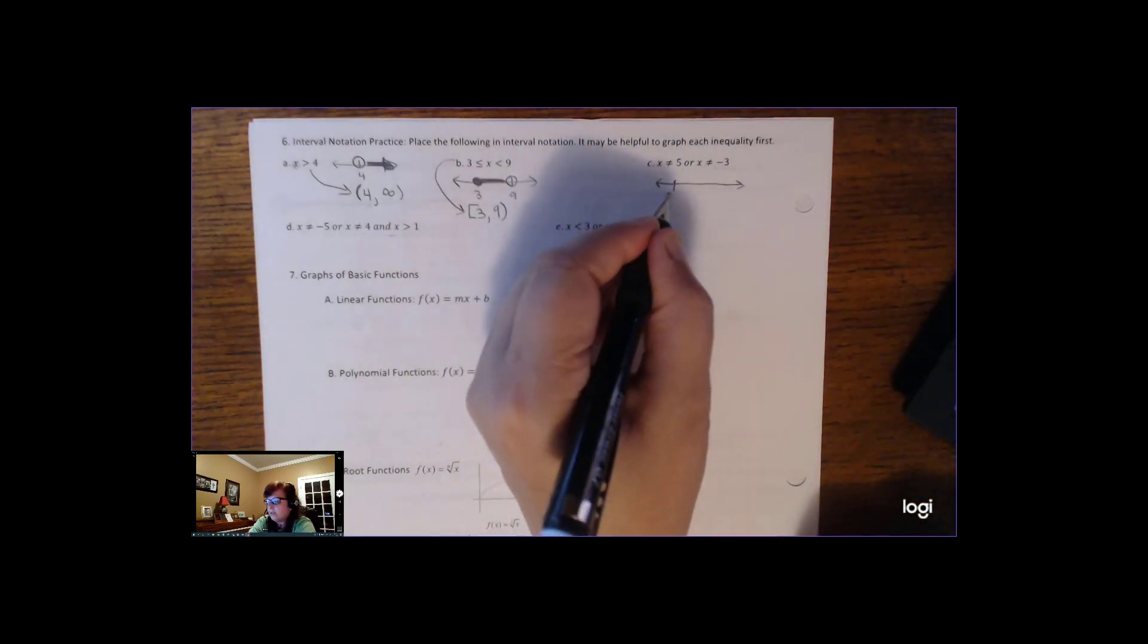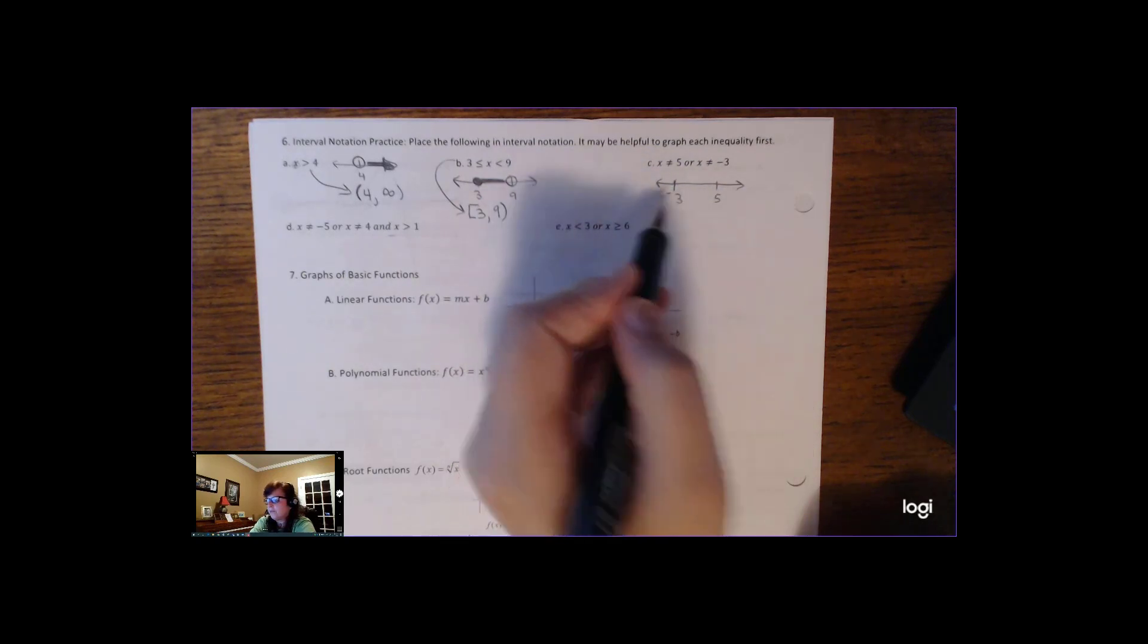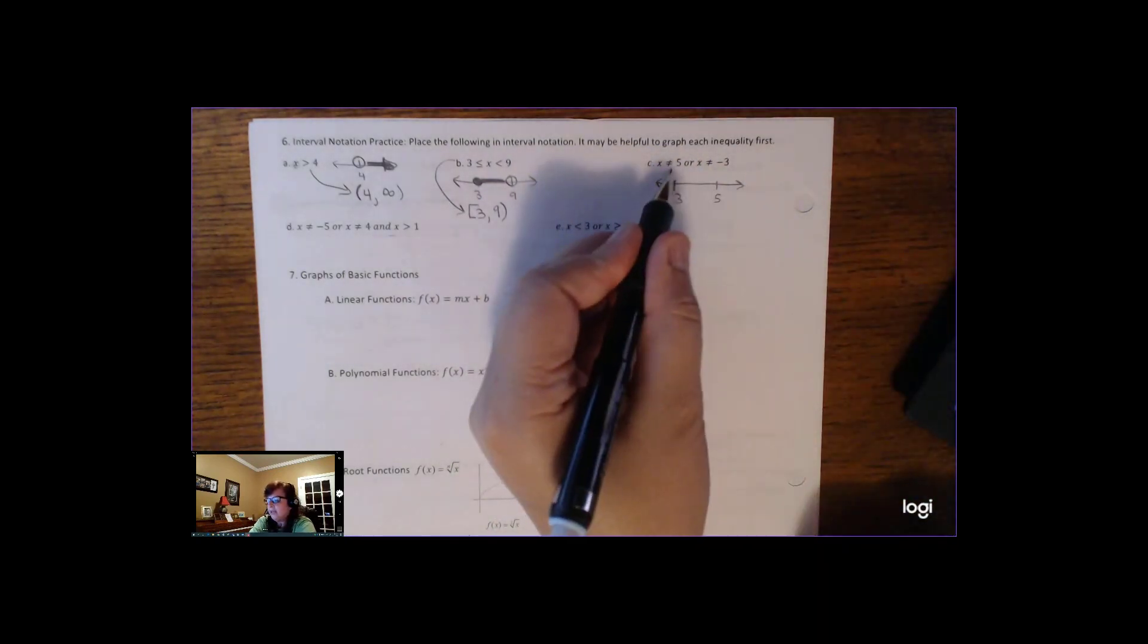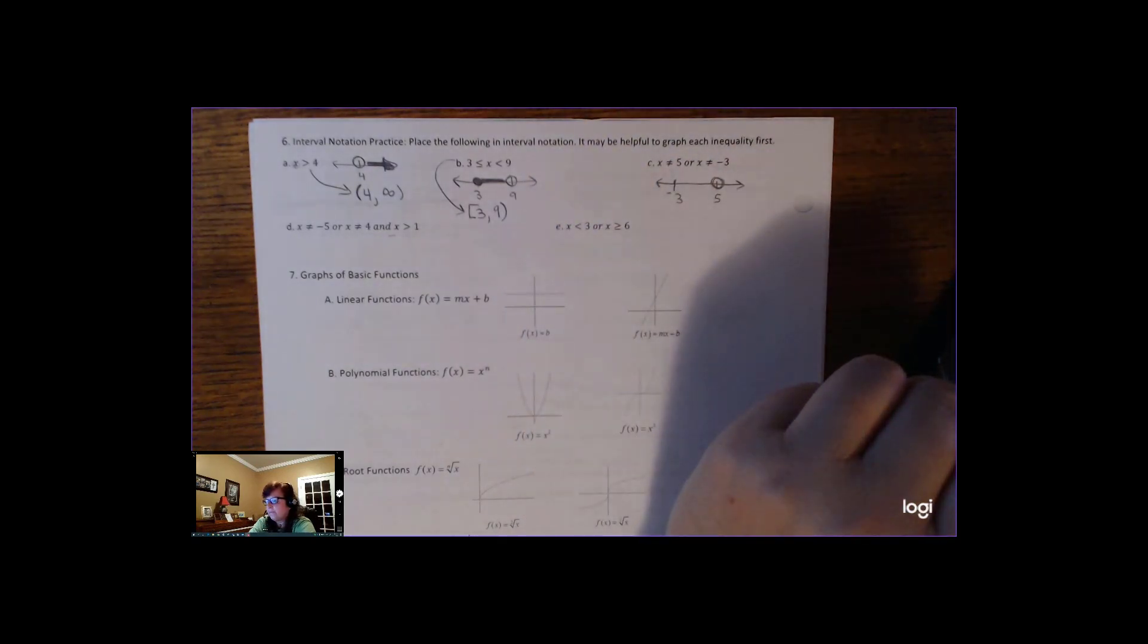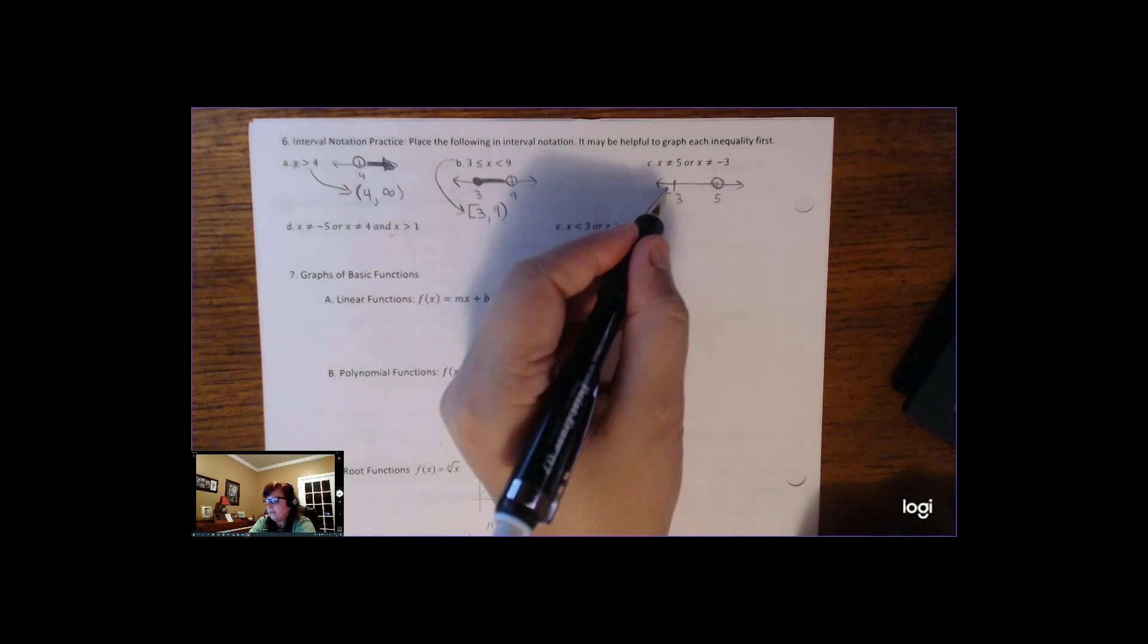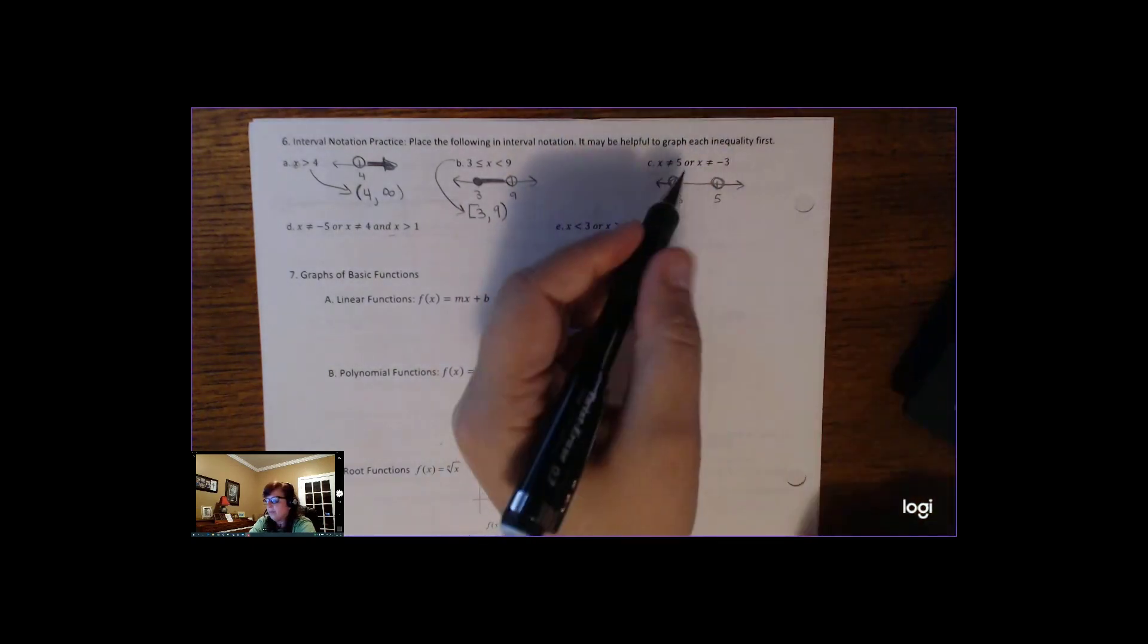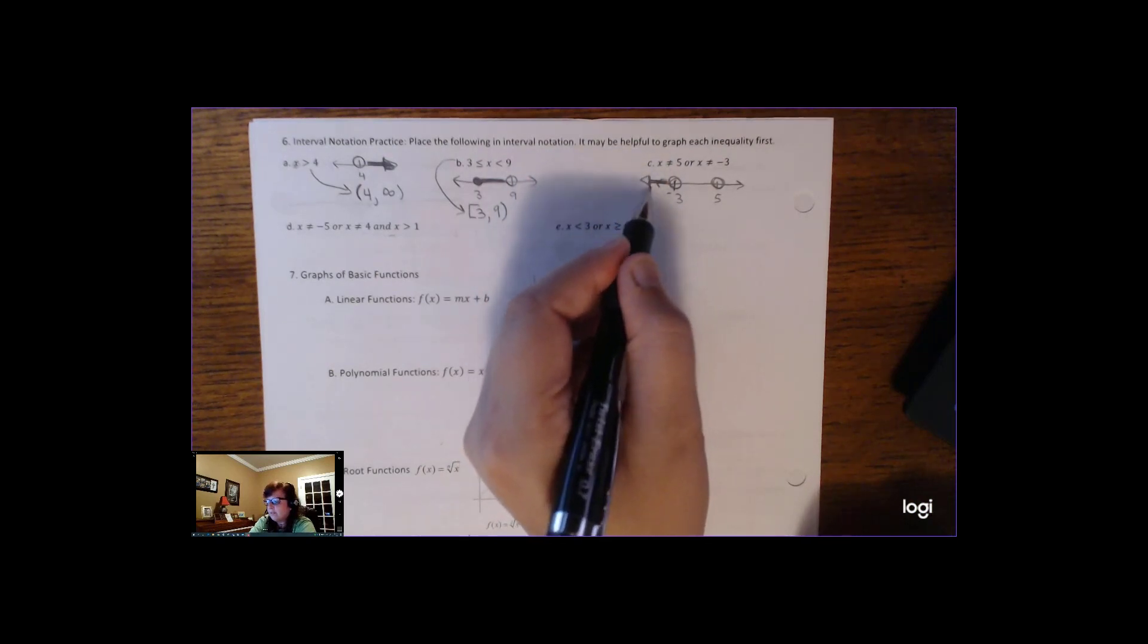Really, really important to understand that interval notation mimics the graph. So I'm going to put the key numbers down, negative 3, and then to the right 5. So there's all these numbers, and all I'm doing is writing down the key numbers. And if x is not equal to 5, I'm going to put an open hole there. And if x is not equal to 3, I'm going to put an open hole there. But what this is saying is that everything else is allowed.